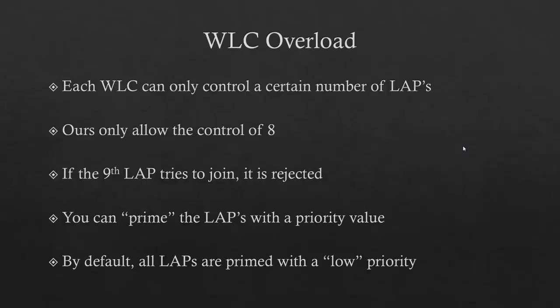In some facilities, wireless is critical — like a wireless doctor's office. If a lightweight access point dies, you don't want several doctors to lose wireless and not be able to perform their duties, because they generate revenue. So you can have redundant lightweight access points in the ceiling ready to go in case a primary one dies and a secondary can take over. You set this up through priority values. By default, all lightweight access points are primed with low priority, and the 2106 will only support eight wireless access points.